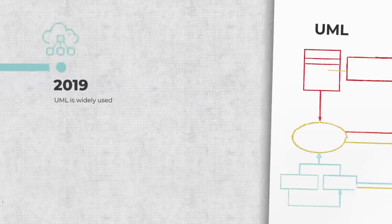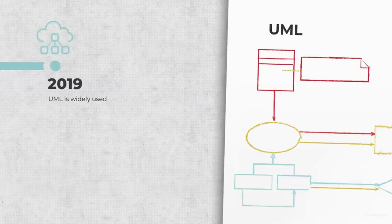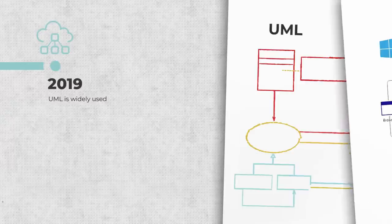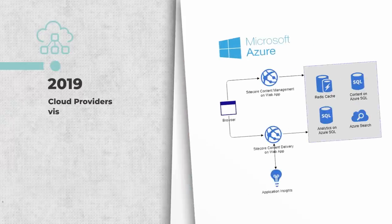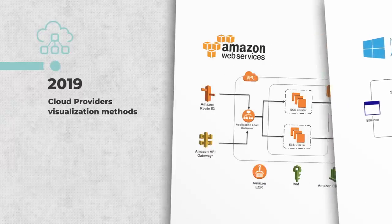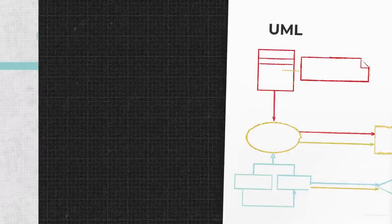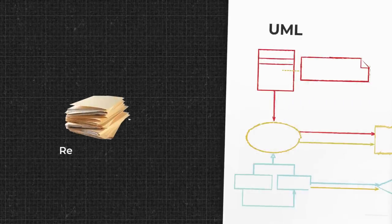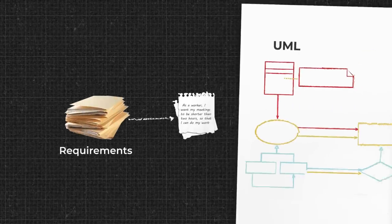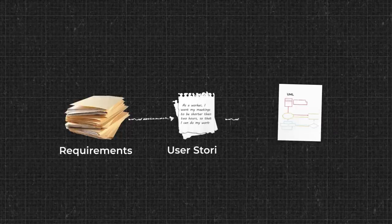And UML isn't the only way to describe architectures. With the growth of cloud services, their providers also suggest their individual visualization methods. And that's how business needs are first translated into user stories, and then into the format that engineers can work with.